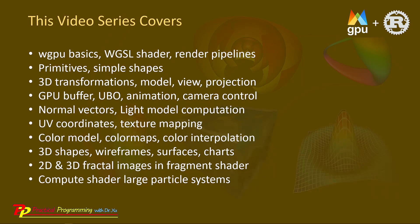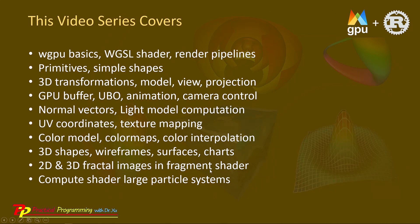In this video series, we will cover the following topics: WGPU basics, the WGSL language, and render pipelines. We will also see how to create primitives and simple shapes, 3D transformations, model-view-projection matrices, GPU buffers, uniform buffer objects, animation, and camera control. We will also cover normal vector calculation and light model computation, texture coordinates and texture mapping, color models, color maps, and color interpolation. We will see how to create 3D shapes, wireframes, surfaces, and charts. We will discuss how to implement 2D and 3D fractal images directly in a fragment shader, and also compute shaders and large particle systems.